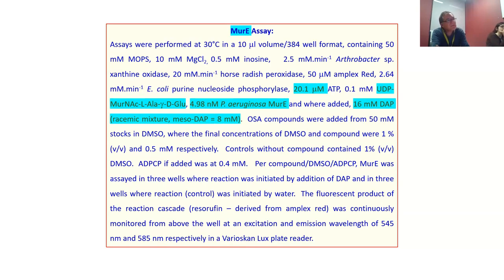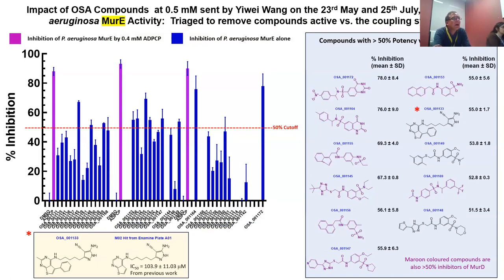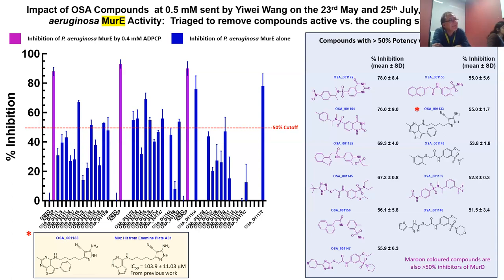After eliminating compounds targeting the coupling system, 11 compounds were found, most of which were also significantly inhibitory against MurE. Compounds inhibiting both MurD and MurE at greater than 50% are highlighted in maroon on the right-hand side; those in black appear to singly target MurD. OSA001133 is essentially an analog of an enamine hit from plate A01-MO2, and appears slightly less inhibitory with the additional phenyl ring than the original hit.